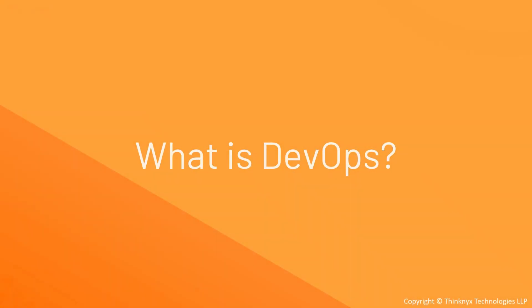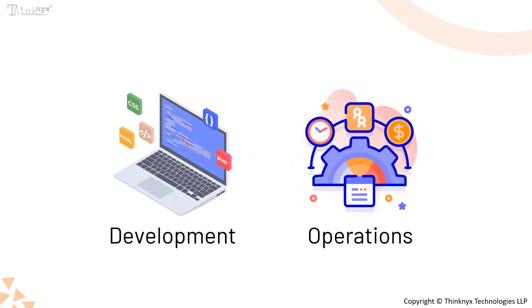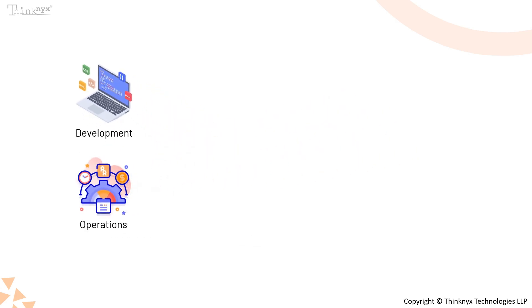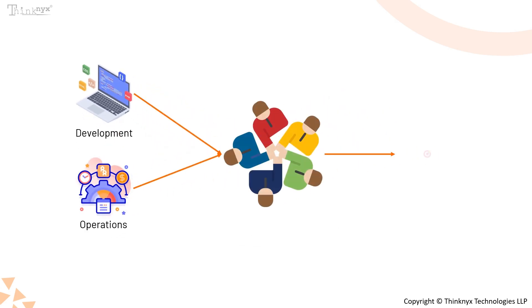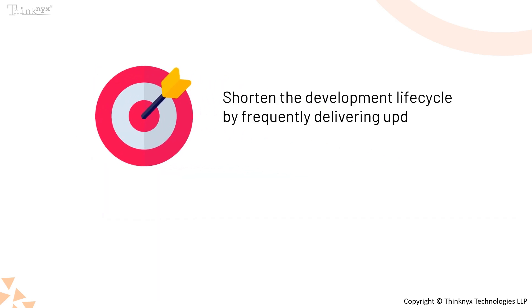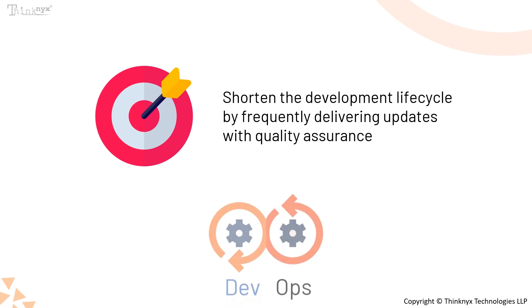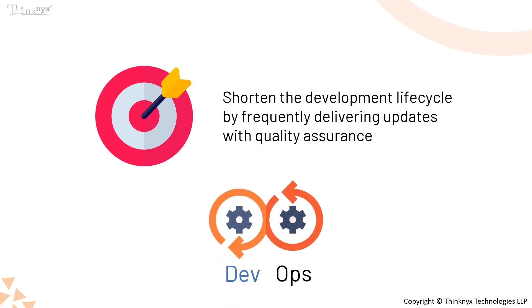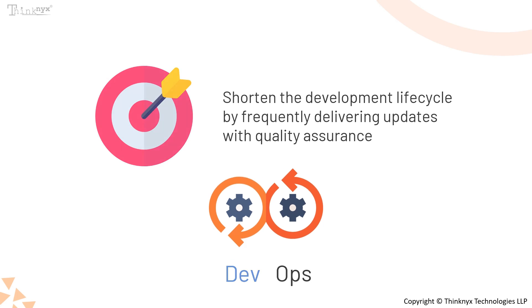First, let's break down the term DevOps. DevOps is the combination of Software Development and Operations that work together to achieve a common goal. The goal is to shorten the development lifecycle while frequently delivering features, fixes, and updates in collaboration with Quality Assurance. It helps teams work more efficiently together to achieve faster and more reliable releases.